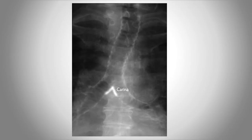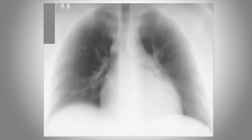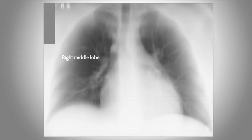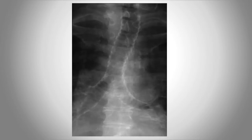The carina, which comes from the Latin word meaning the keel of a ship, is at the bifurcation of the trachea into the left and right main stem bronchi. The right bronchus leads down to the bronchus intermedius, which then branches to supply the right middle lobe and the right lower lobe. When looking at the carina straight on, it appears slightly to the left of the midline, which lines the right bronchus up as a direct continuation of the trachea.